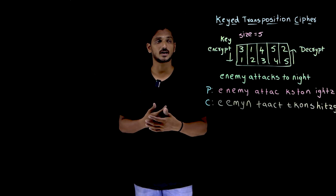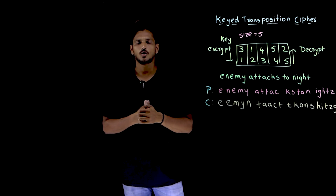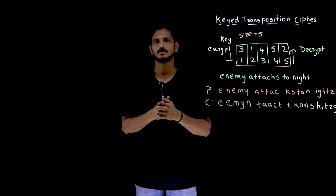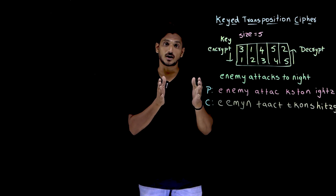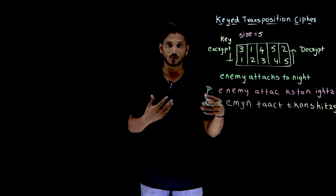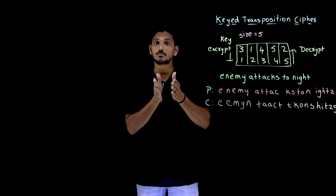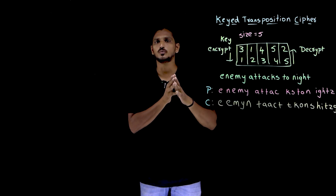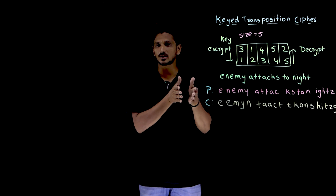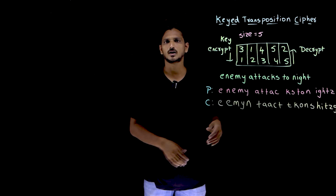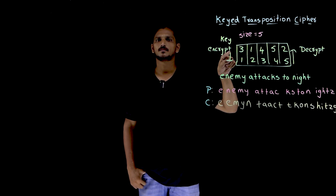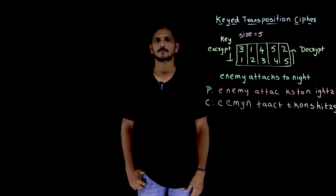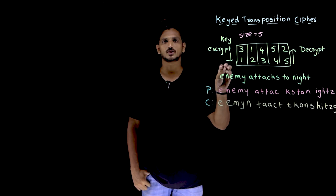This is how we do the transposition cipher using key, based on the key value. Now, what is the possibility of cryptanalysis attacks? If you want to attack this by taking the ciphertext, you have to try multiple possible sizes — size value of 2, size value of 3, size value of 4, size value of 5, 6, and so on — and all possible keys in each size. It is more difficult compared to the previous keyless examples we discussed. That is the cryptanalysis attack possible on the ciphertext.